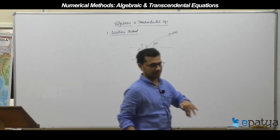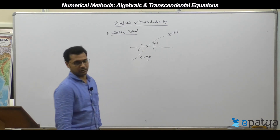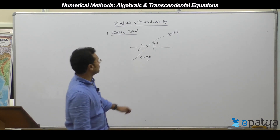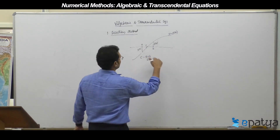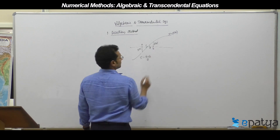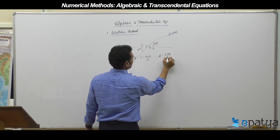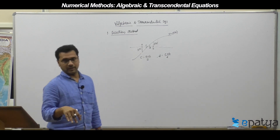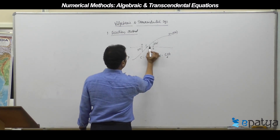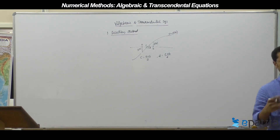I will find f of c. Suppose f of c is negative, then there exists a root between c and b. Again bisect: d equals c plus b divided by 2. Then find f of d. If f of d is positive, there exists a root between c and d — again bisect to get e. Like that, I keep moving forward with different iterations.